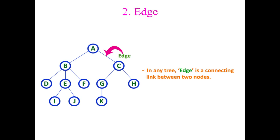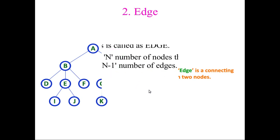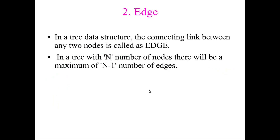The second terminology is edge. An edge is the link between one node and another node. The line connecting any two nodes is called an edge. If there are n number of nodes, there will be n minus 1 number of edges.